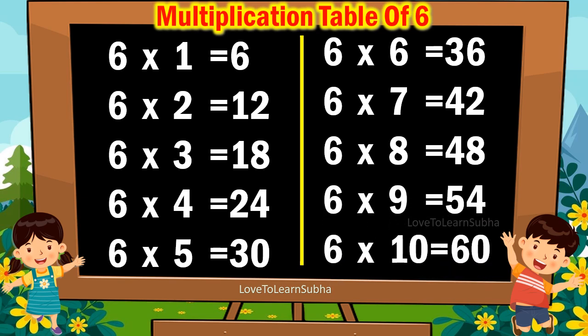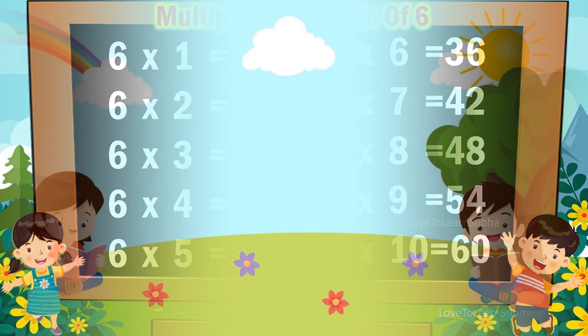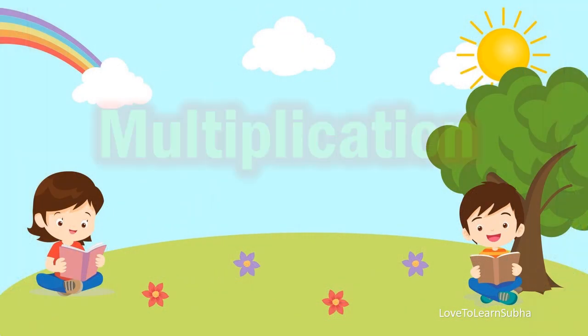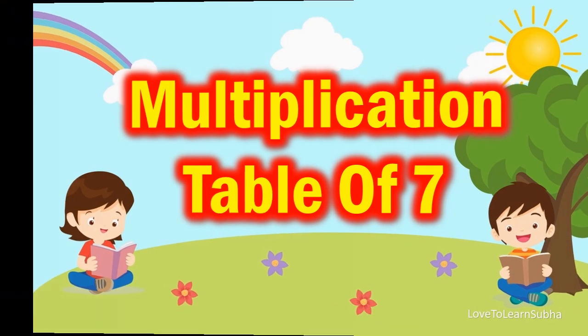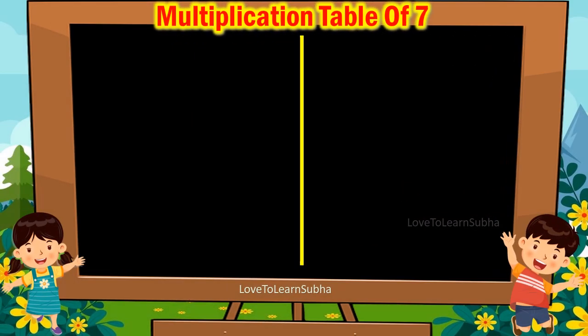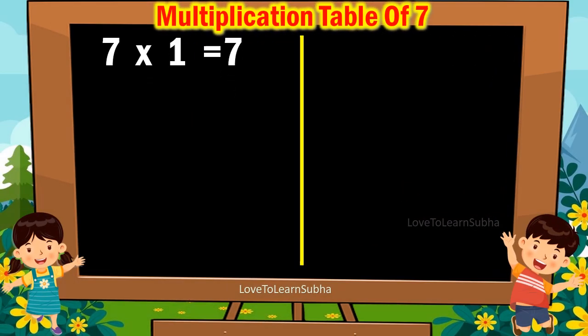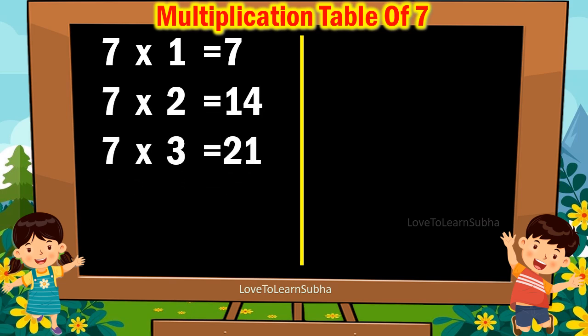6 10s are 60. Multiplication table of 7. 7 1s are 7. 7 2s are 14. 7 3s are 21. 7 4s are 28.